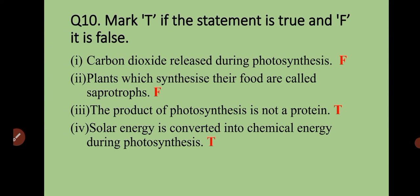Question number ten: mark T if the statement is true and F if it is false. First: carbon dioxide is released during photosynthesis — False, because carbon dioxide is used during photosynthesis and oxygen is released. Second: plants which synthesize their food are called saprotrophs — False, because saprotrophs feed on dead and decaying organic matter and do not synthesize food. Third: the product of photosynthesis is not a protein — True, because the product of photosynthesis is carbohydrate. Fourth: solar energy is converted into chemical energy during photosynthesis — True.